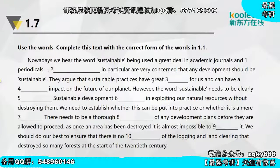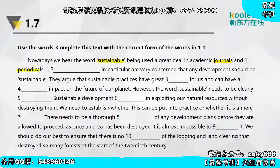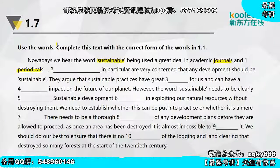1.7练习，用表格里的单词填空。Nowadays we hear the word 'sustainable'（可持续发展的）being used a great deal in academic journals and periodicals。Journals我们在The Media那节课讲过，是期刊；periodical和它基本属于同一词，都是按时期发行的刊物。第二个空，填environmentalists，他们尤其关心任何发展是否应该是可持续的。